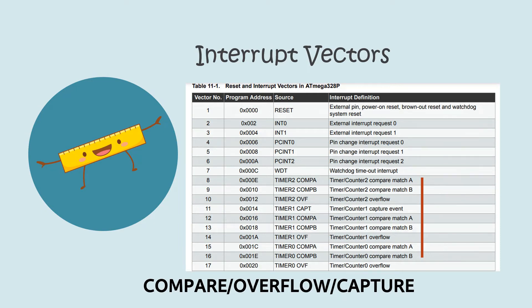Here are the interrupt vectors associated with the timers. The timer is basically a register which increments its value at each clock cycle. The Arduino runs at 16 megahertz — that is 16 × 10⁶ clock cycles per second — and each time it does so the timer value increments by 1. We can have different types of interrupts: an overflow interrupt which activates when the maximum value is reached, a capture interrupt that captures the value in the timer register when a certain external event happens, and a compare interrupt which gets triggered when a threshold value smaller than the maximum value of the register is reached.